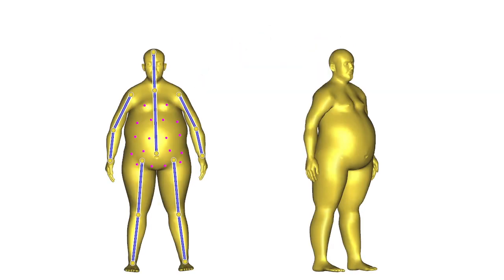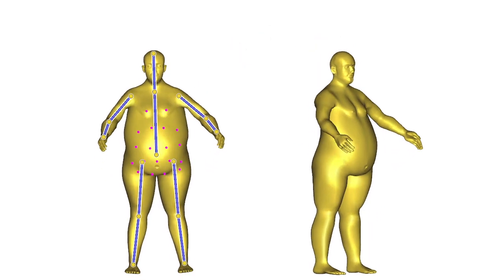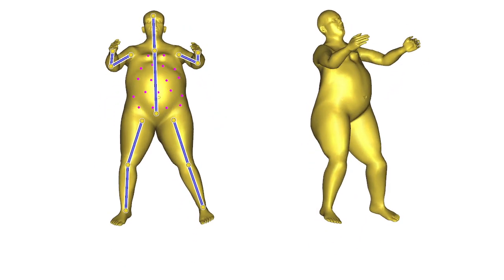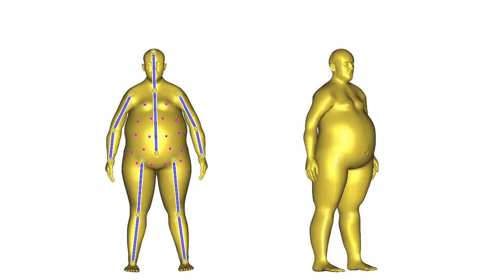Our deformation subspaces also reduce computation time for physics. In this example, we place 20 auxiliary points on the belly to make it sufficiently supple. This gives our subspace the ability to express secondary motion effects due to inertia and gravity.